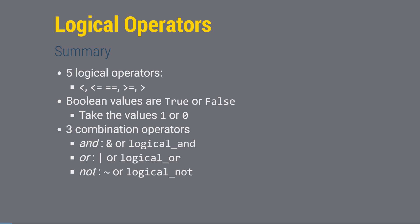This lesson introduced logical operators. In particular, there are five: less than, less than or equal, equal, greater than or equal, and greater than. These logical operators all produce Boolean values interpreted as true or false. These values are also interpretable as 1 or 0, which allows them to be used in mathematical operations — for example, summing trues to get a count, or multiplying variables by true/false so values that are true return themselves and values that are false return 0. Finally, we saw how to use combination operators AND, OR, and NOT to construct complex multi-condition logical expressions.